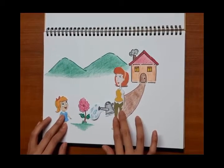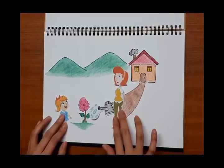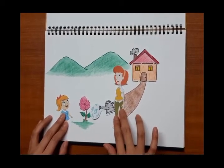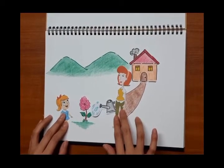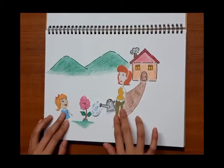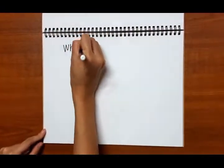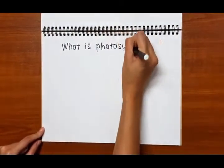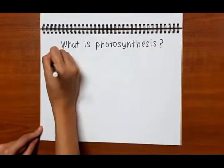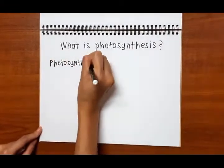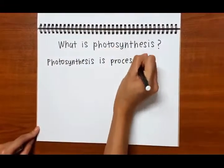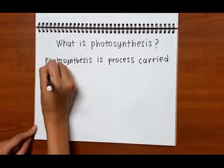The girl asked, 'Photosynthesis? What is photosynthesis?' Photosynthesis is a process carried out by green plants to synthesize glucose from carbon dioxide and water in the presence of sunlight and chlorophyll.